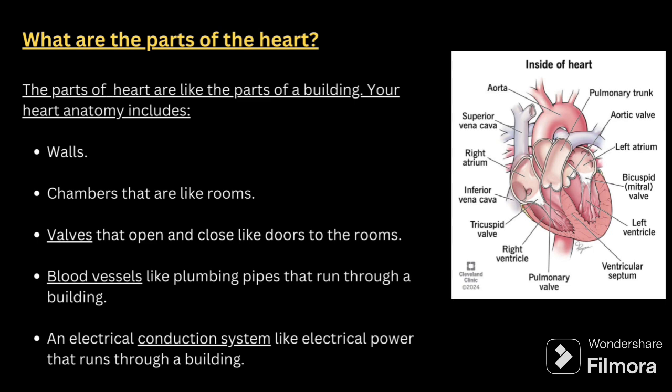After functions, you can talk about the parts of the heart. The parts are similar to the parts of a building. They include walls, chambers, valves, blood vessels, and the electrical conduction system. Walls and chambers are like building rooms; valves are like doors opening and closing between rooms; blood vessels are like plumbing pipes running through the building; and the electrical conduction system is like electrical power running through the building.